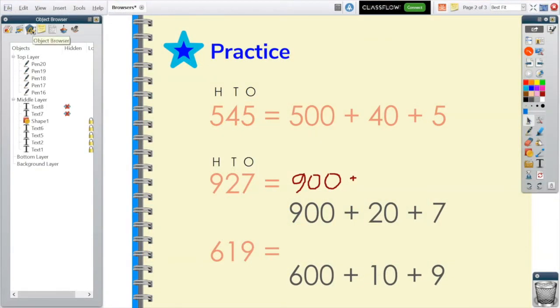Object Browser identifies each of the objects on your page, like images, shapes, and text.